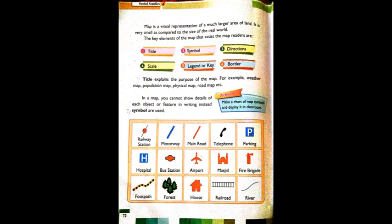A map is a visual representation of a much larger area of land. It is very small as compared to the size of the real world. You can see a large area on a map, but you cannot show its full actual size - the real world size is converted into a very small visual representation.